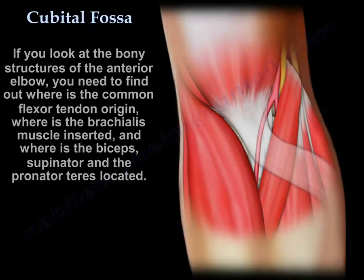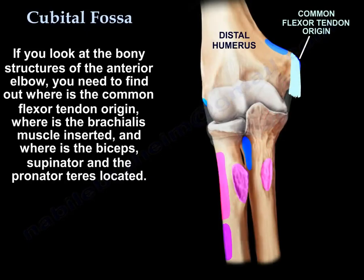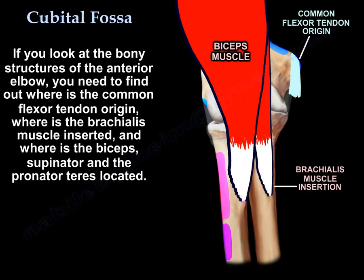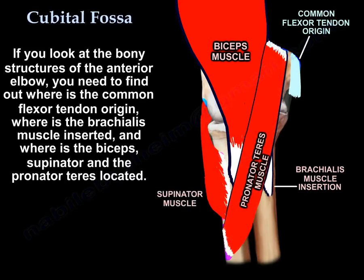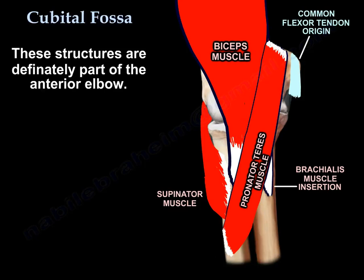If you look at the bony structures of the anterior elbow, you need to find out where the common flexor tendon origin is, where the brachialis is inserted, where the biceps, the supinator, and the pronator teres are located. These structures are definitely part of the anterior elbow.